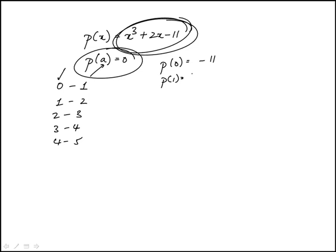p of 1 is 1 plus 2 minus 11, which is minus 8. p of 2 is 8 plus 4 minus 11, which is 1.